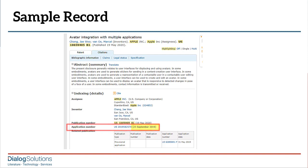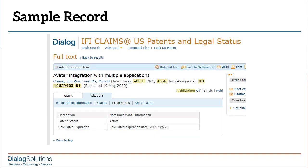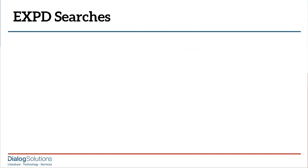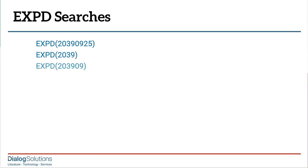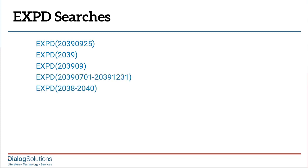The calculated expiration date can be searched in IFI using the expiration date, or EXPD, field. The options for the search format are much like with any other date field in Dialog. You can search for an exact date, or for a whole year, or select both a year and a month. You can look for a range by using a hyphen between two date values, use the greater-than symbol for dates after a given date, or use the less-than symbol for expirations before a certain date.